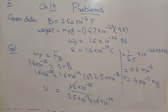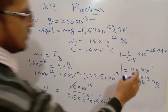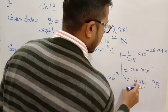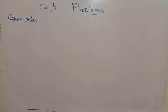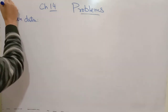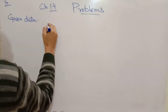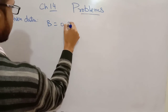यह question number 2 था। यहाँ एक छोटी सी mistake हुई है — यह minus 3 नहीं बल्कि minus 5 होगा। अगला जो है वह: magnetic और electric field को perpendicular to each other apply किया गया है।